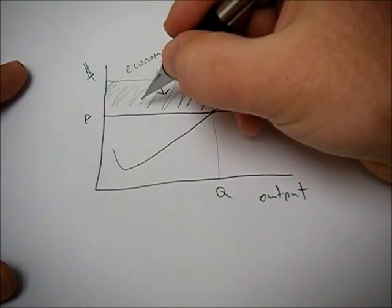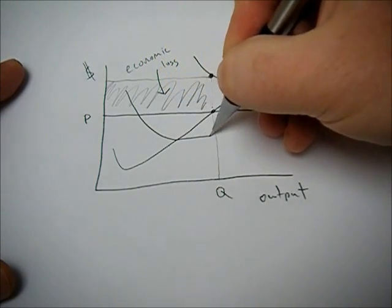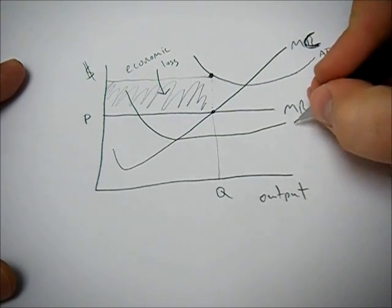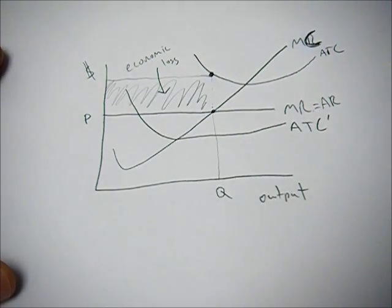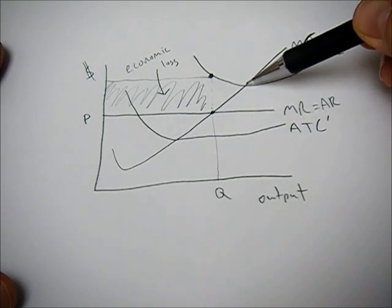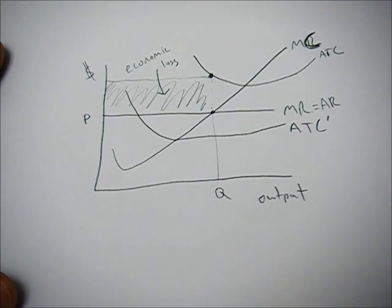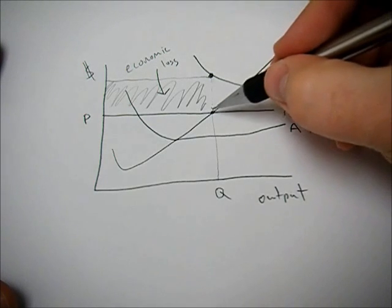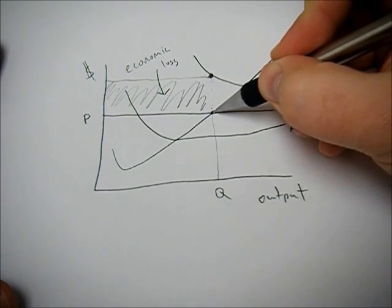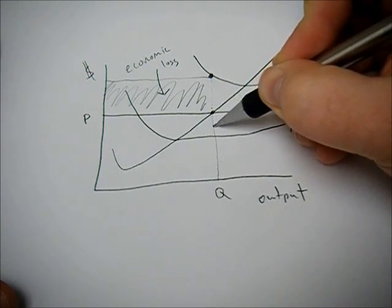But there's another case. What if our average total cost went down? And notice how careful I was in drawing these average total cost curves. The minimum of the average total cost has to intersect this marginal cost line. So again, we're going to produce where marginal cost equals marginal revenue, as we talked about before.